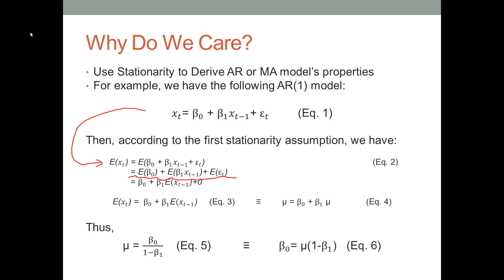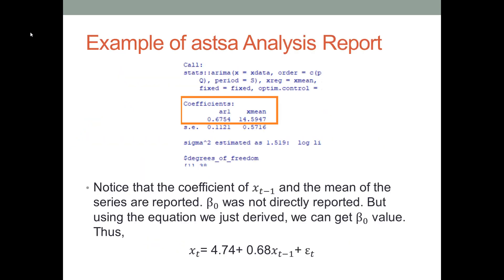Now we get equation 5 and 6 based on the stationary assumptions. Let's use the example to see how we can use them in practice. When you perform linear regression analysis, the software will usually report the intercept value and the coefficient value directly. But this may not be the case when you use some packages for time series analysis in the R software.